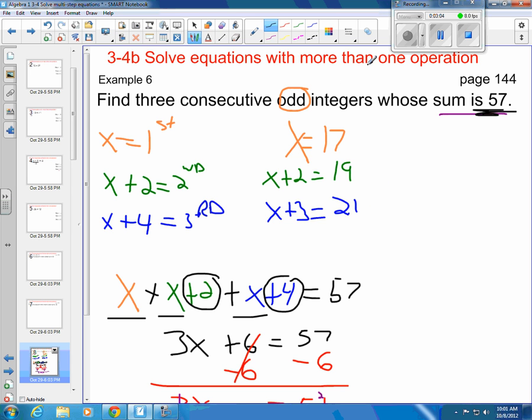And then we want to verify, does it exactly get us 57 like we want? So I take 17, 19, and 21, and I add them all up. And 9 plus 1 is 10, plus 7 is 17. So 2, 3, 4, 5. And I do, in fact, get 57. So here is my answer. 17, 19, and 21 are three consecutive odd integers whose sum is 57.